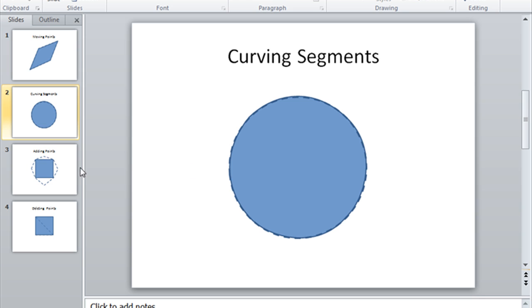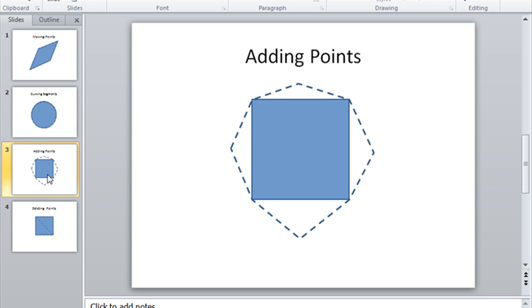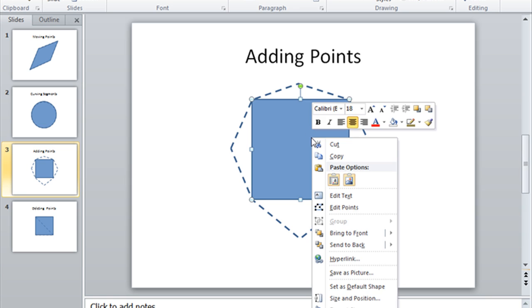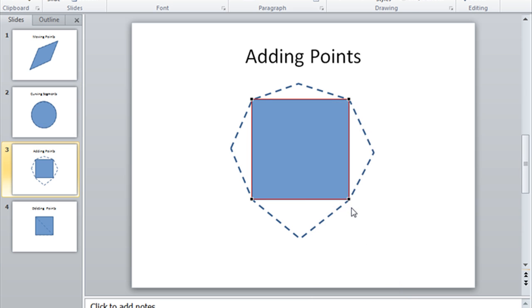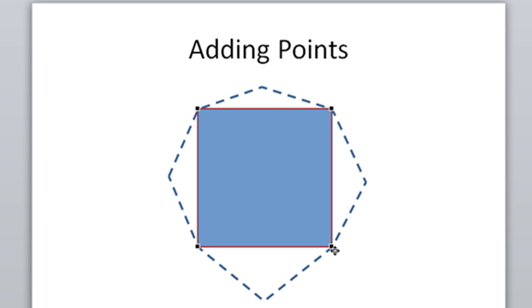Another way you can customize a shape is by adding points to that shape. So jumping over to our third slide, we've got another square that we're going to add additional points to. Let's right-click, open up Edit Points. And just like curving segments, there's a couple of different ways you can add a point.